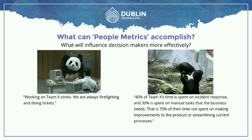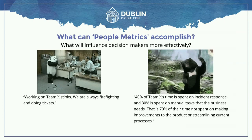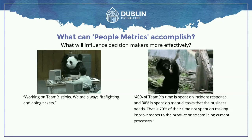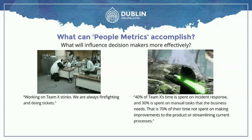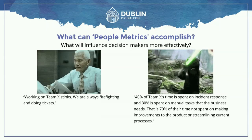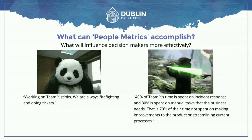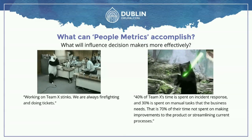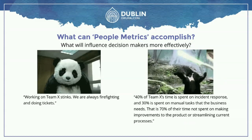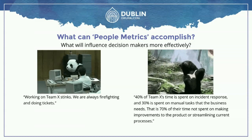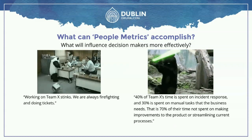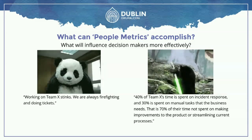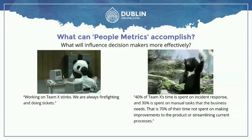So what would influence decision makers more effectively? Let's take on a little story of the two bears. The bad bear just says, 'Hey, working on Team X really stinks. We're always firefighting and doing tickets, it's disruptive.' You're not really able to back up your point. Or you could be the good bear: '40% of Team X's time is spent in incident response, and 30% of their time is spent in manual tasks — that's 74% of their time not spent on making improvements to the product or streamlining current processes.' Out of these two, which one is going to be more successful in getting change to happen?